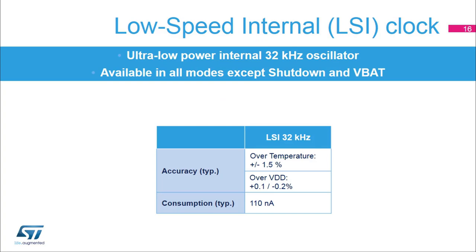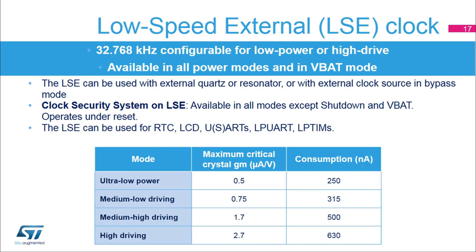STM32L4 devices embed an ultra-low power 32 kHz RC oscillator, which is available in all modes except shutdown and VBAT. The LSI can be used to clock the RTC, the LCD, the low-power timers, and the independent watchdog. The accuracy of the LSI is plus or minus 1.5% over temperature and plus 0.1 minus 0.2% over voltage. The LSI consumption is typically 110 nanoamps. The LSE oscillator driving capability is programmable, with four modes available from ultra-low power mode with a consumption of only 250 nanoamps to high driving mode. A clock security system monitors for failure of the LSE oscillator; in case of failure, the application can switch the RTC clock to the LSI. The CSS is functional in all modes except shutdown and VBAT, and is also functional under reset.